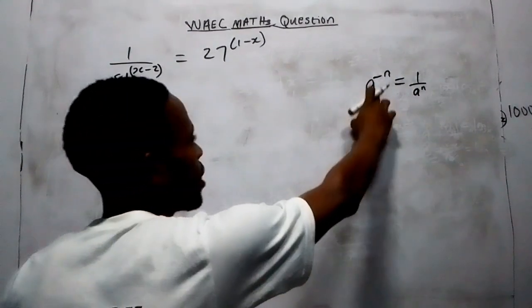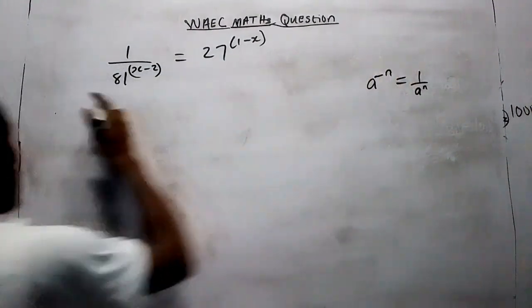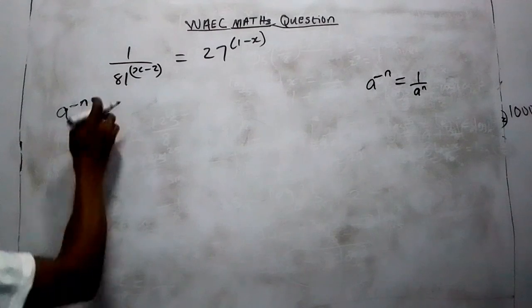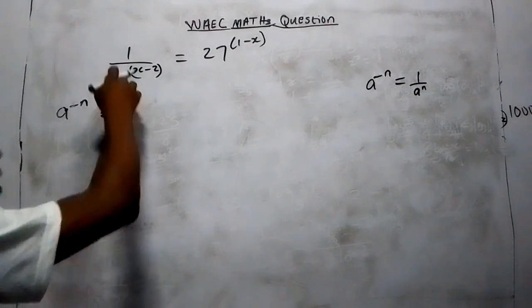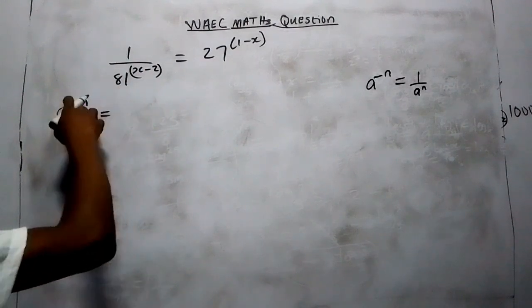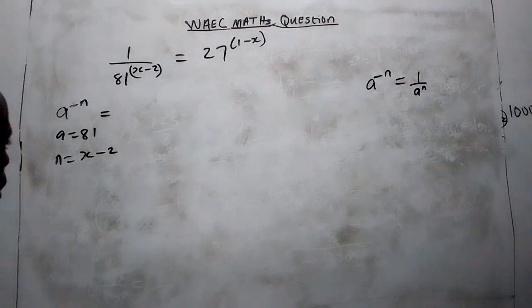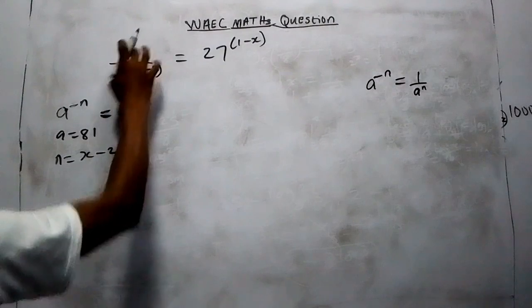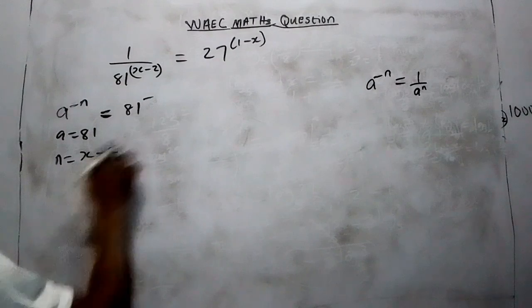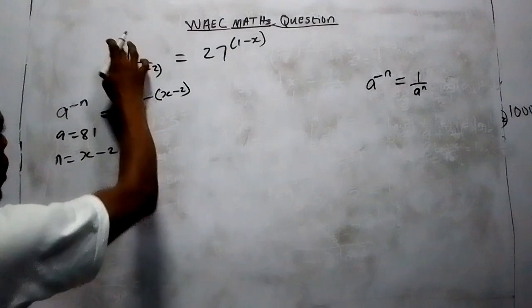Comparing the expressions: our base A is 81, and our index N is (S minus 2). So we can rewrite 1 over 81 to the power of (S minus 2) as 81 to the power of minus (S minus 2). That equals 27 to the power of (1 minus S). Now we have expressed the left side in the form A to the power of minus N. We can see that the bases — 81 and 27 — are not the same, so we need to make them the same.